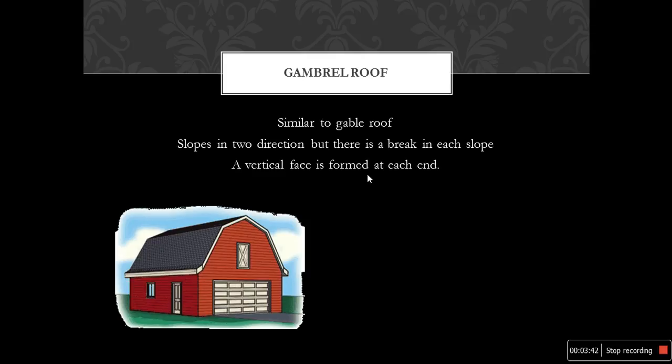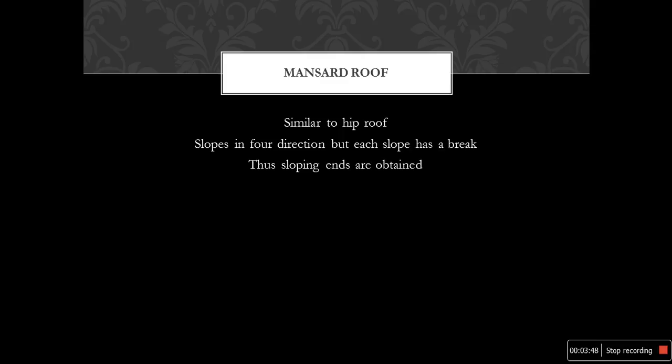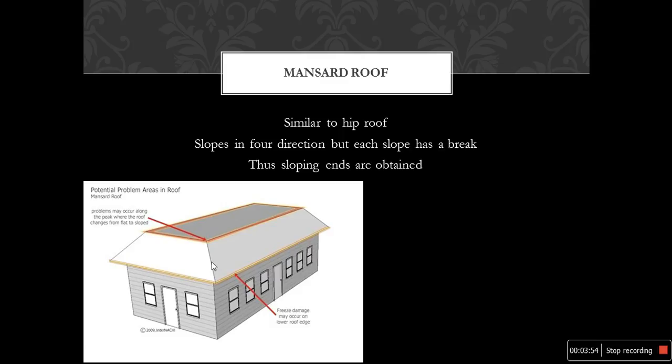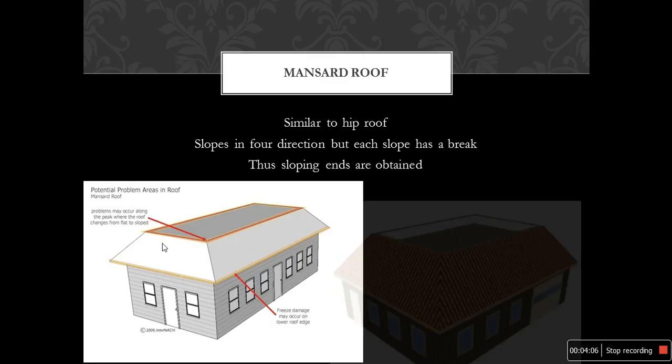Mansard roof is similar to a hip roof with slopes in four different directions, but each slope has a break. There is a top flat surface on the top, and on the four different directions there will be four different slopes. This is an example of a mansard roof.